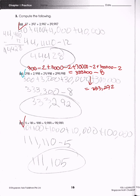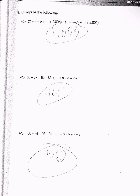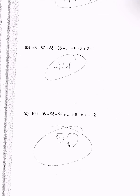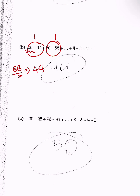For A and C, solve on your own using similar strategies. For problem B of the next set, we group numbers into pairs: 88 minus 87 is 1; 86 minus 85 is 1. Since we have 88 numbers, we have 44 groups each equal to 1. So 44 times 1 gives us 44.